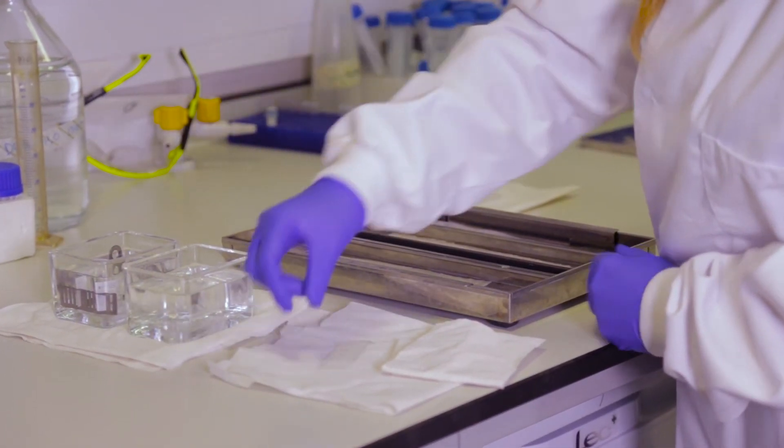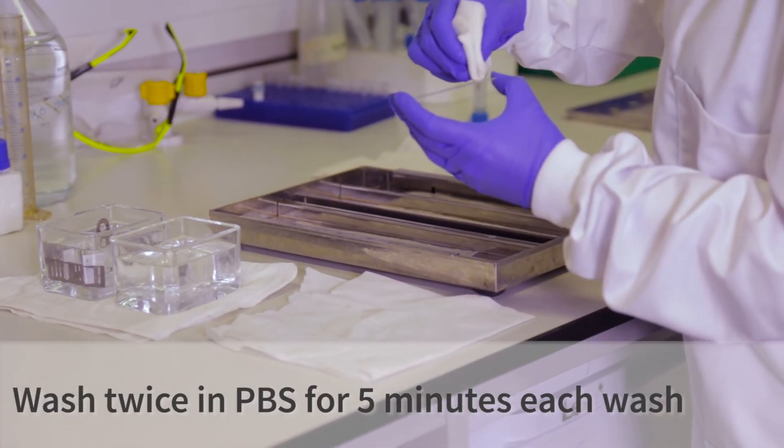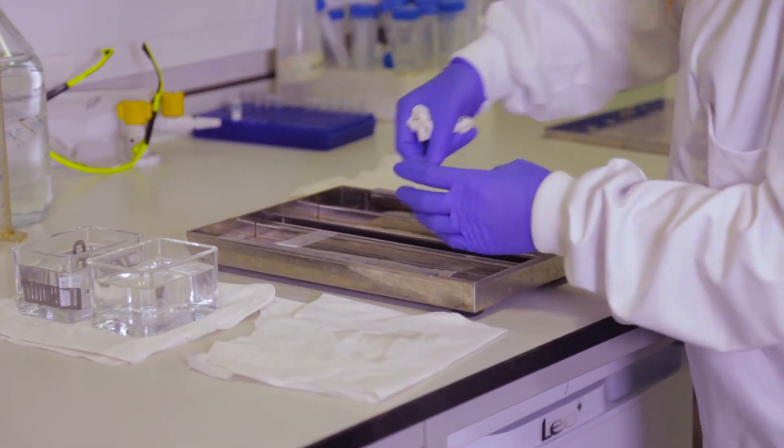After the secondary antibody incubation, the slides are again washed in PBS. You then dry the back and sides of the slides as done previously and place them back in the immunostaining tray.